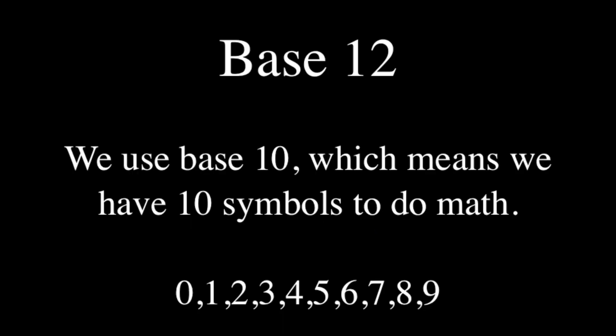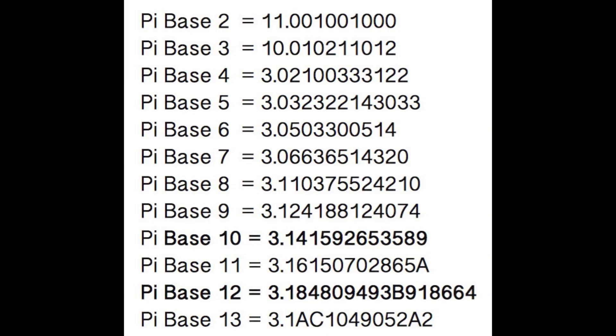We use base 10, which means we have 10 symbols to do math, 0 through 9. But you could use any number of symbols — just look at pi in different bases. In base 2, or binary, only the digits 0 and 1 are expressed. Pi in base 4 is expressed only using the digits 0, 1, 2, and 3.